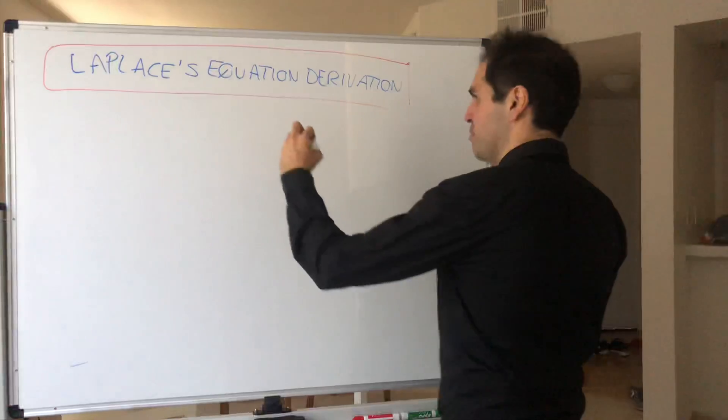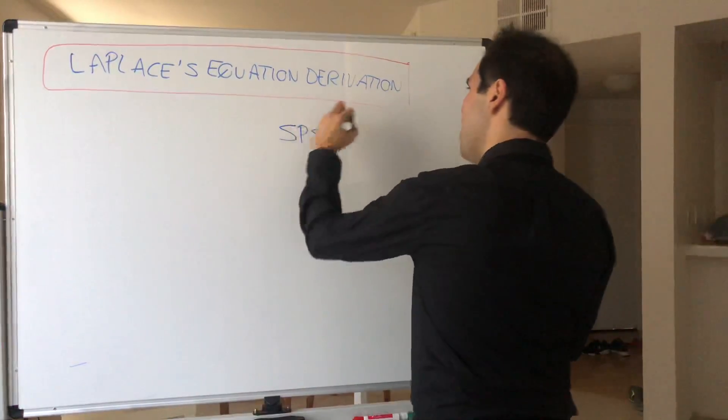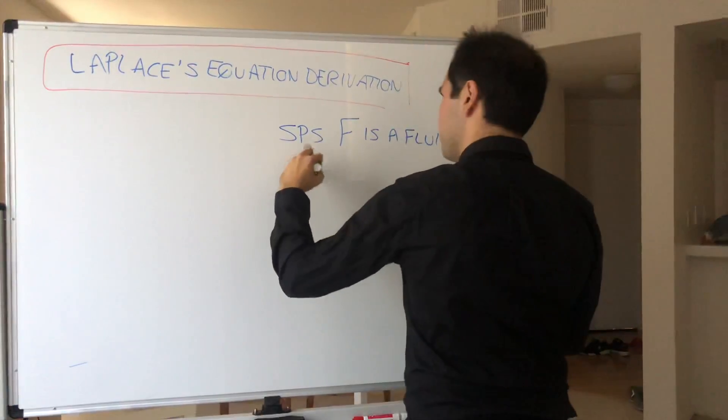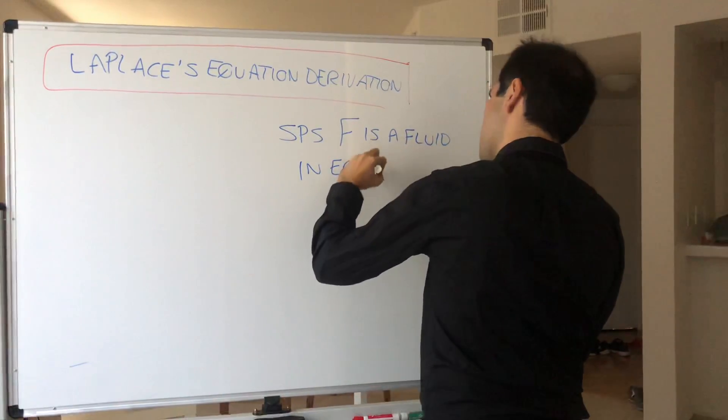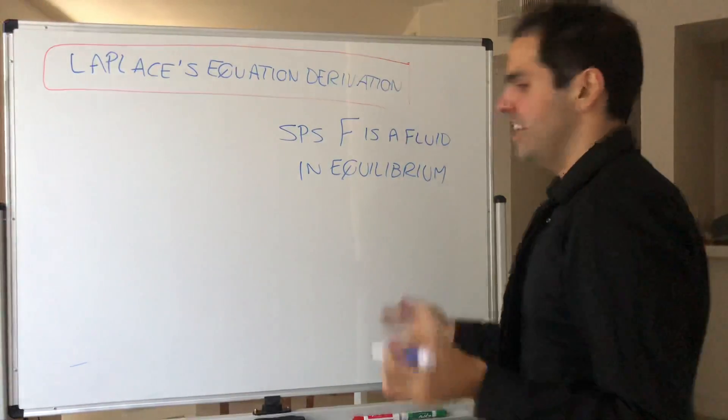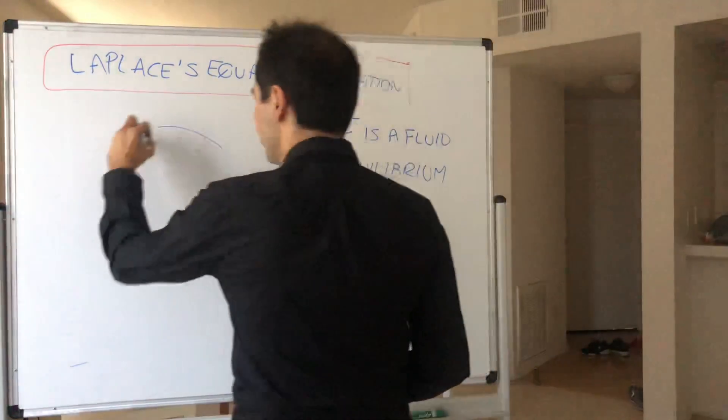And here's the assumption. Suppose F is a fluid in equilibrium. What does that mean? Again, let's fix a region U.